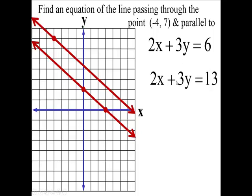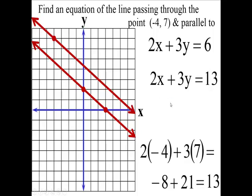But this one we found out goes through that point. To find out the 13, we plugged in the (-4) and the 7. The negative 4 from that point goes here, the 7 goes here. You're getting negative 8. 3 times 7 is 21.